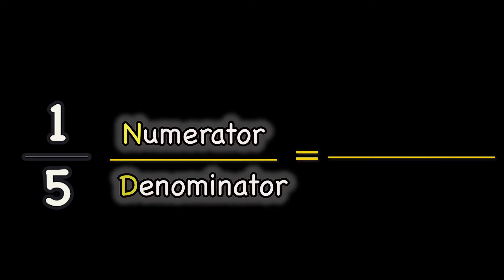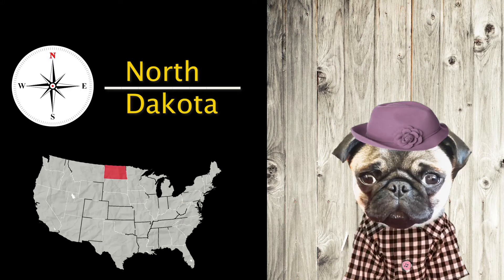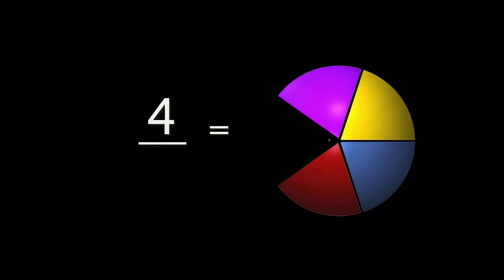To remember the correct placement of numerator and denominator of a fraction, think of North Dakota. Remember the numerator goes north. The numerator shows the number of parts out of the whole. The denominator shows how many equal parts an item has been divided into.